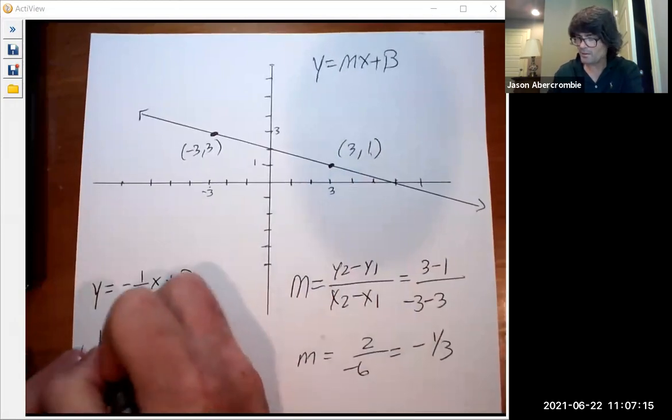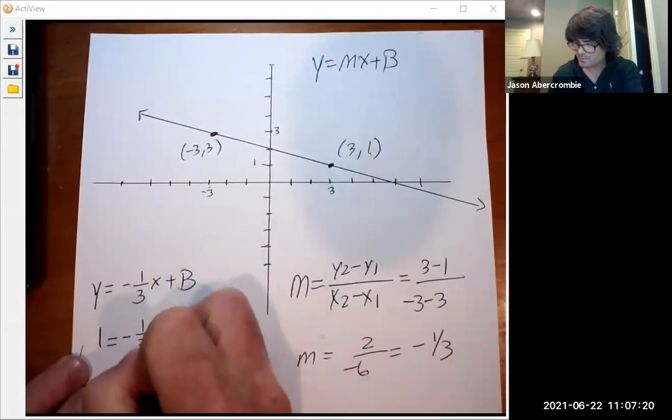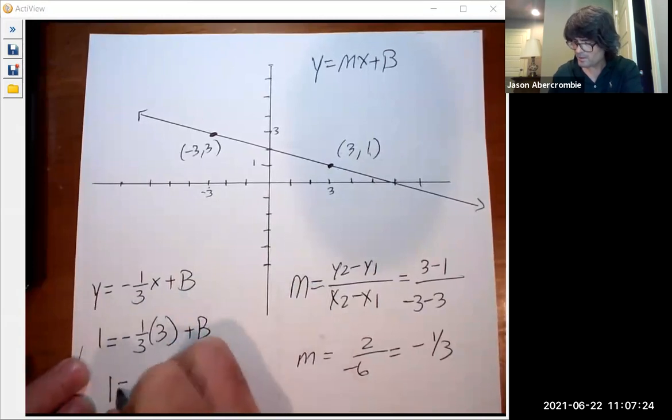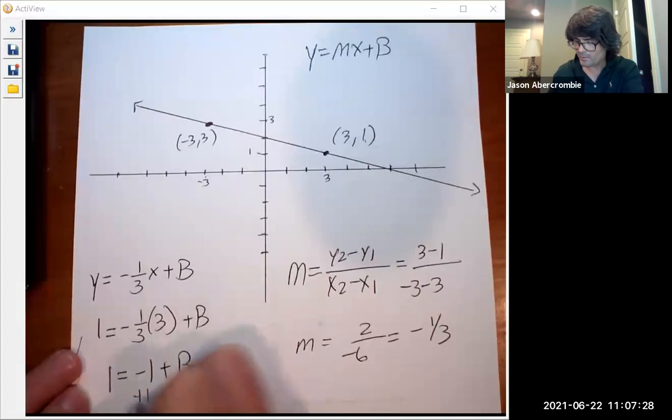y is 1 - you can pick either point, it doesn't matter - x is 3. So 1 equals negative 1 plus b. Add 1 to both sides and you get b equals 2.